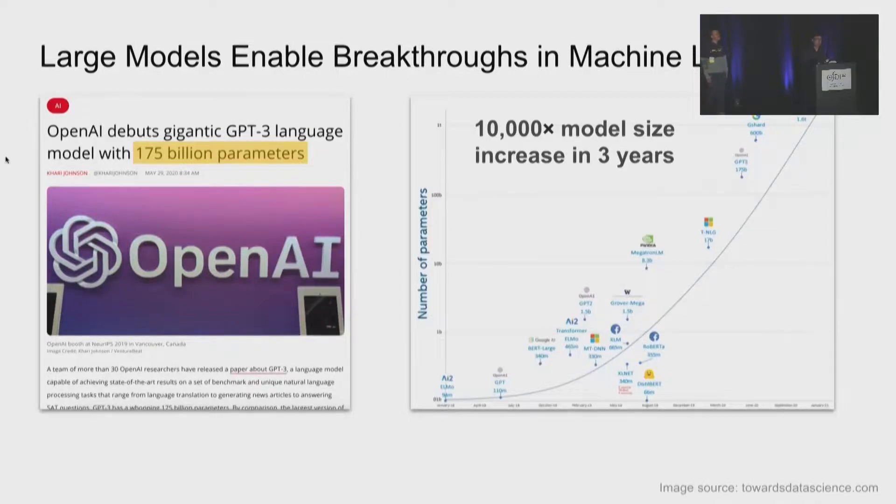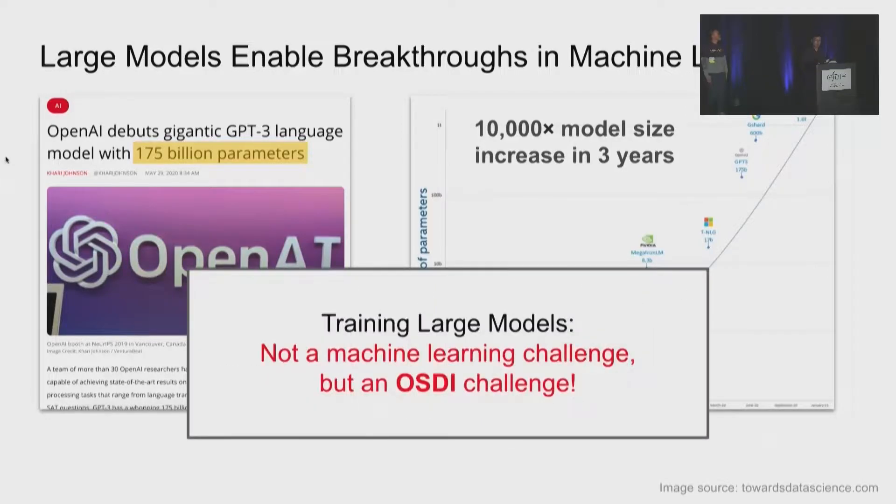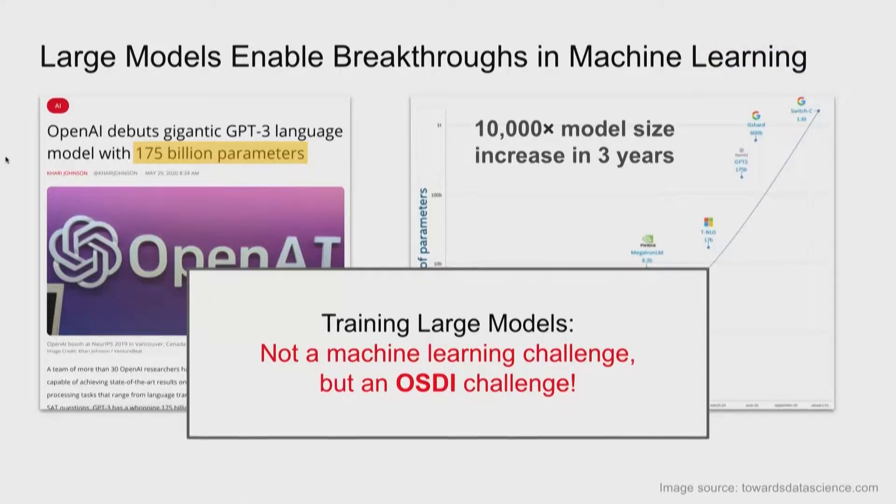But how is this related to OSDI? Let me explain. Training large models is actually not a machine learning challenge, but an OSDI challenge. If we take a closer look at these groundbreaking large models, the designs of the models are almost the same as five years ago. People just use more machines to train larger models on larger data sets. So these breakthroughs are enabled by simply scaling existing model designs. In other words, the large model breakthrough requires few machine learning innovations, but a lot of system innovations. So this is good news for our OSDI community.